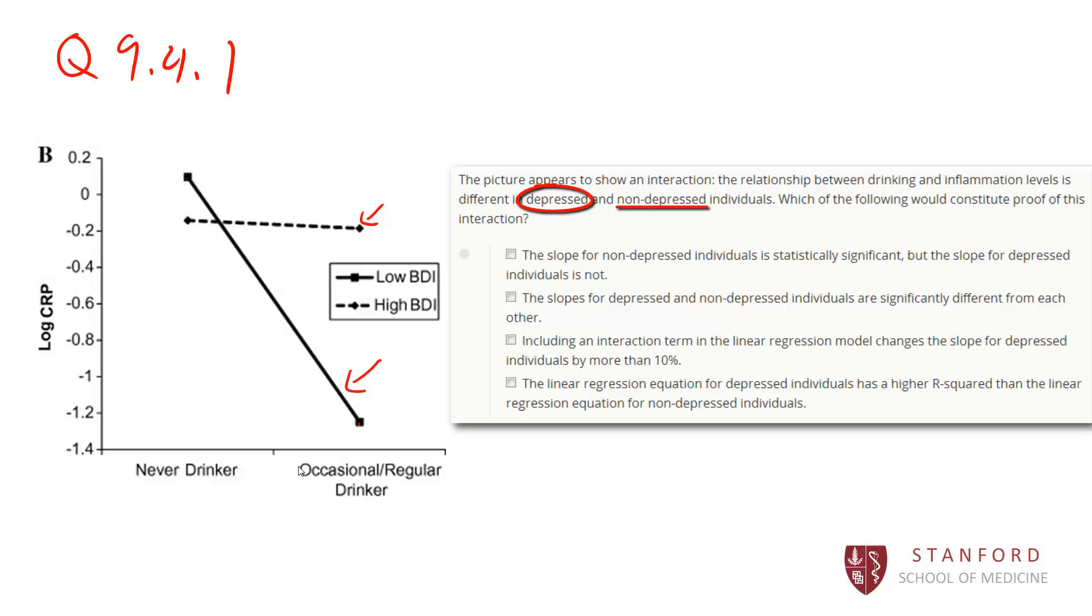But what would the actual proof of an interaction be here? In order to prove interaction, what would prove it here is that the slope for this group would be significantly different from the slope for the non-depressed group. So the slopes actually have to be significantly different from one another to prove that there really is a significantly different relationship between those two groups. So the correct answer here is B.